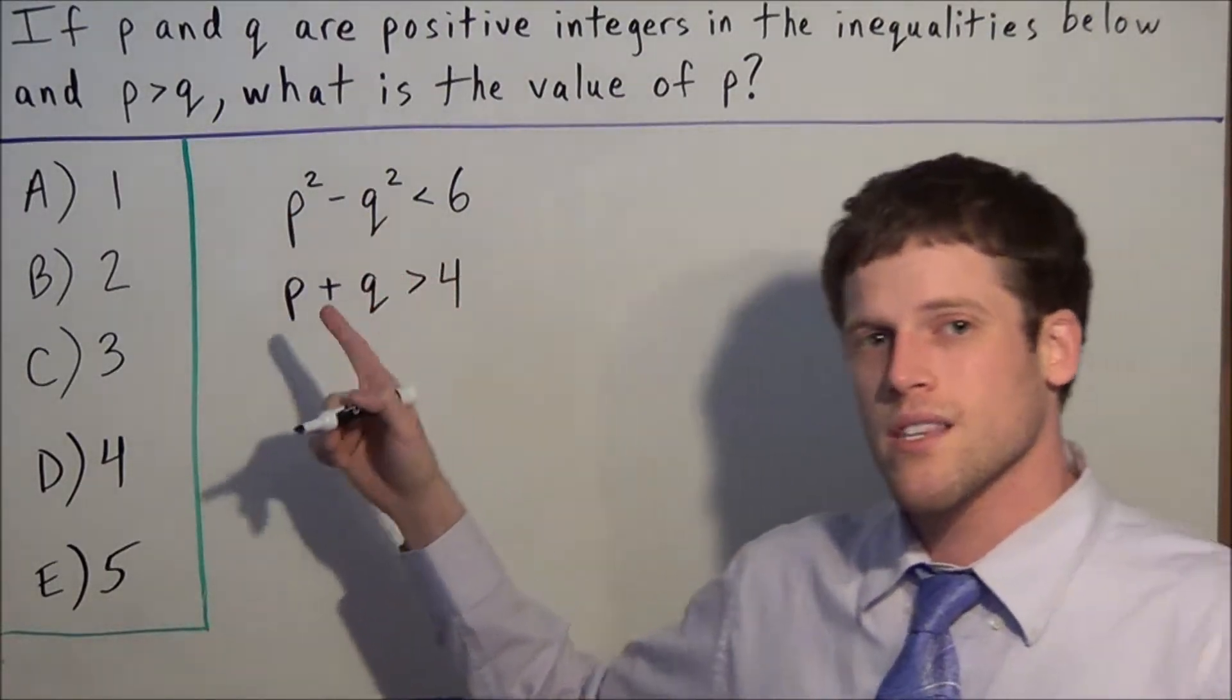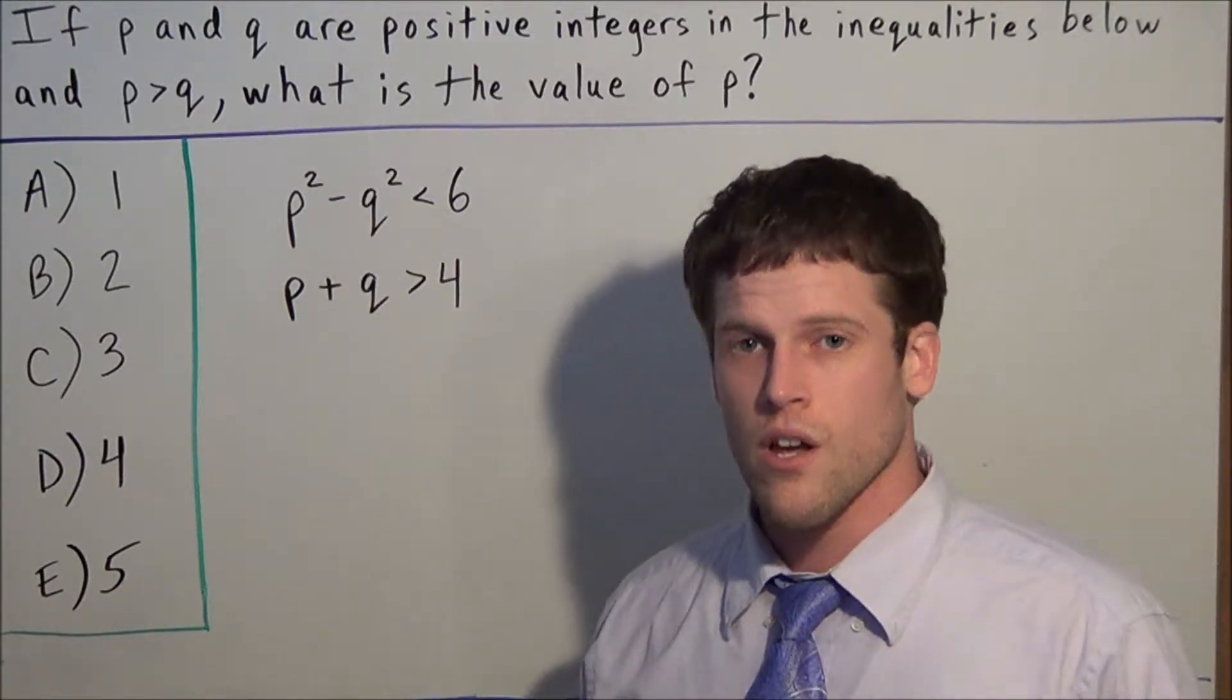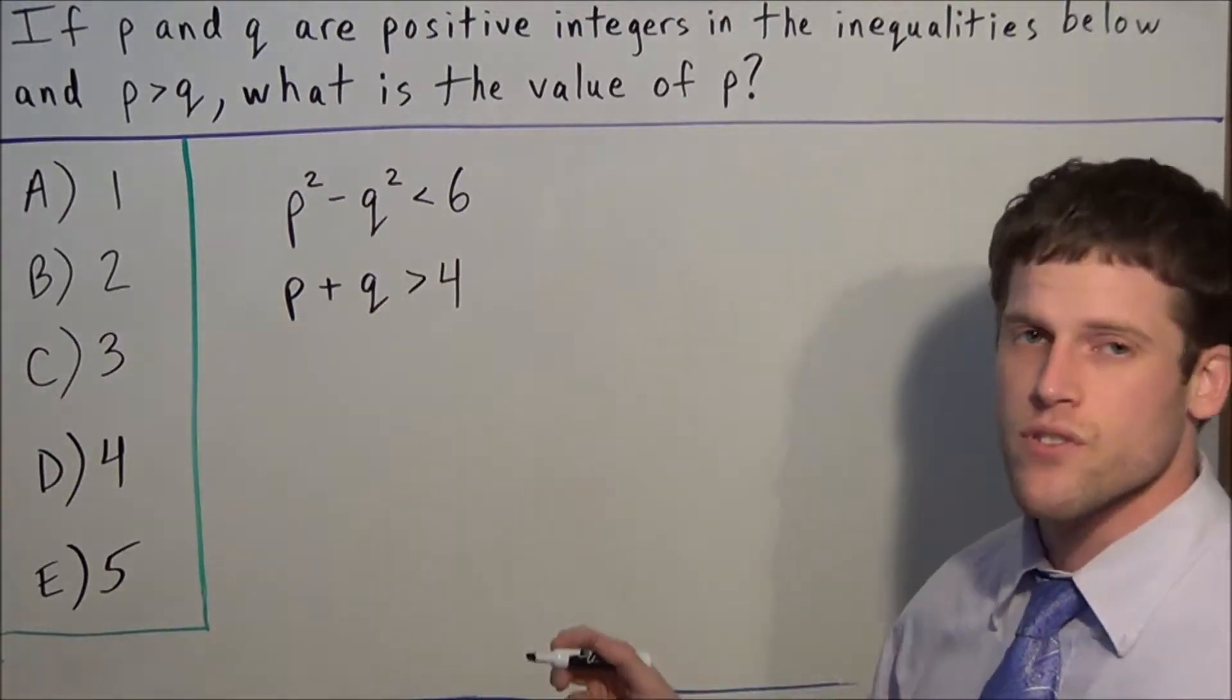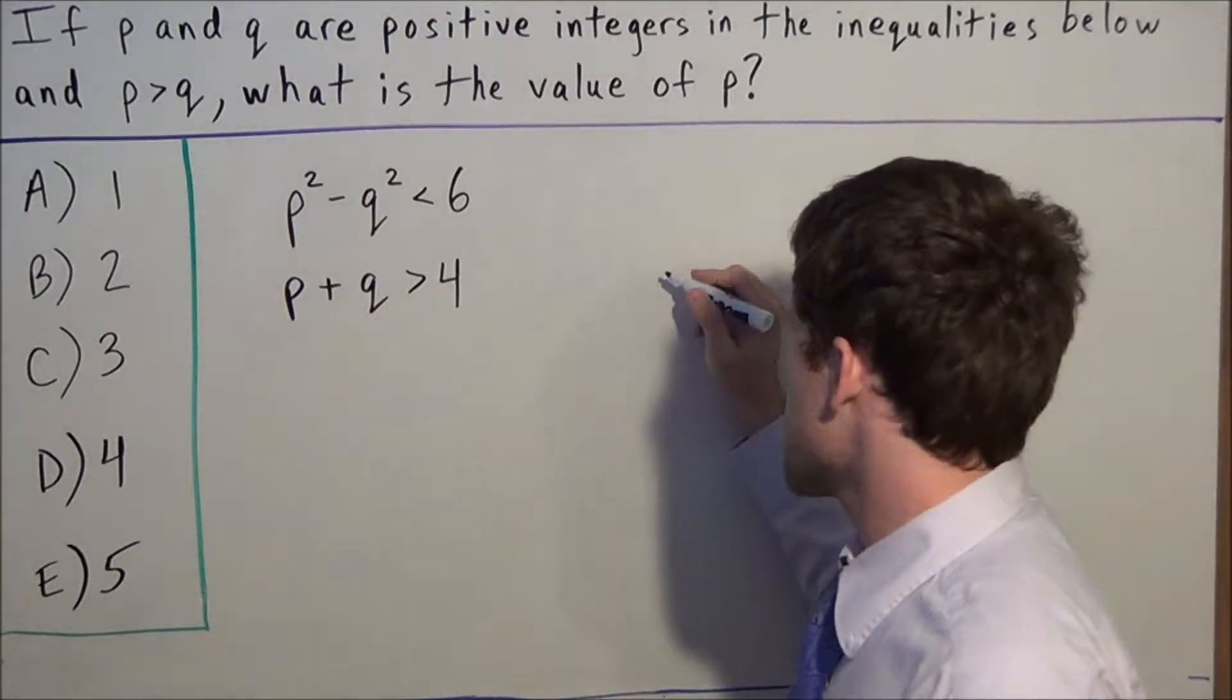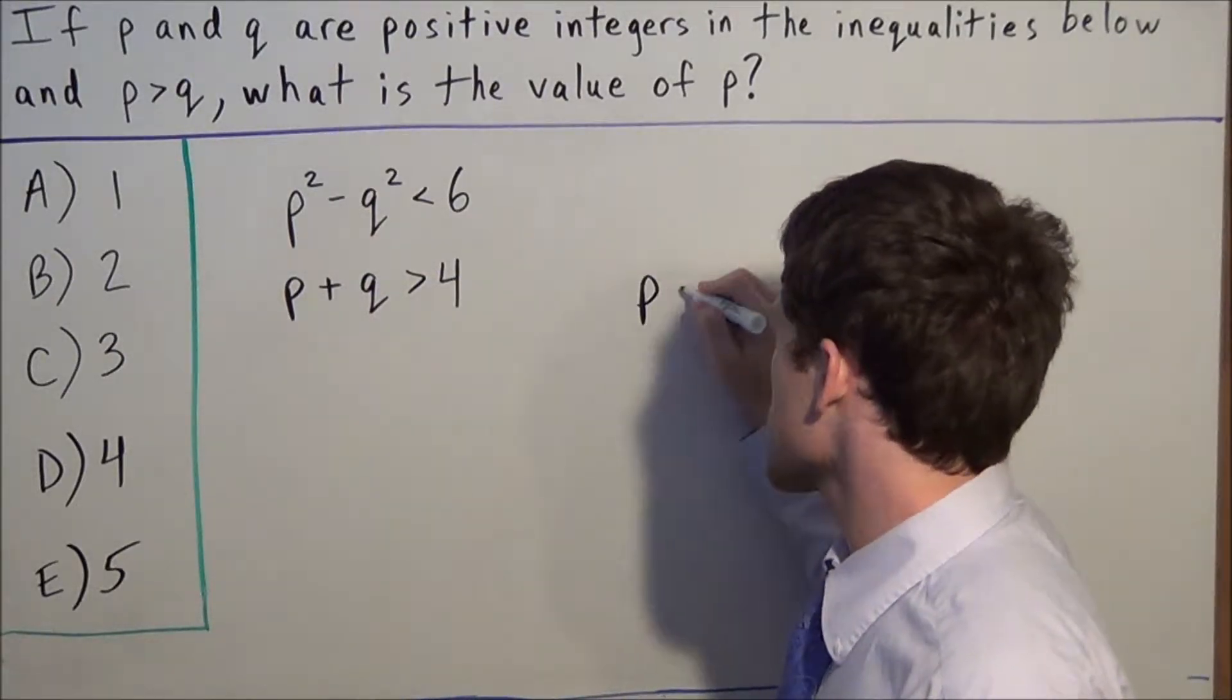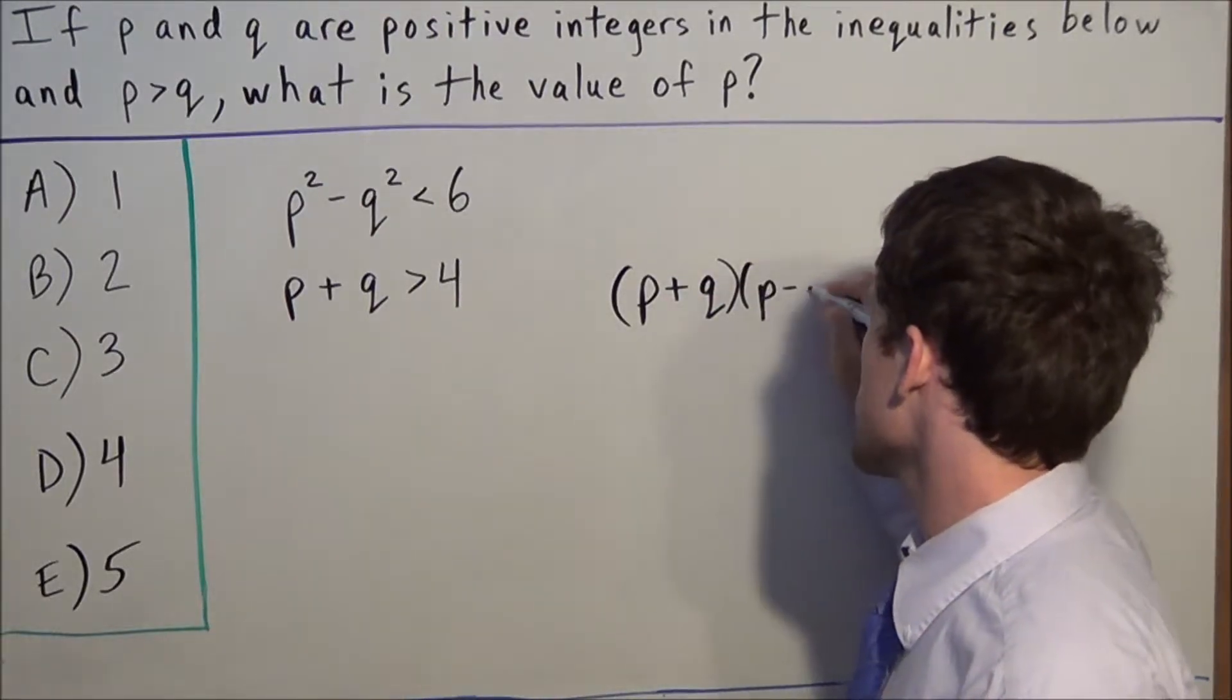We have to think, why did they give us the form p² - q²? We should recognize that as a difference of perfect squares. The first thing we'll want to do is factor p² - q² to (p + q)(p - q).